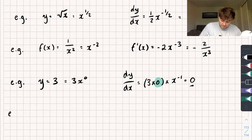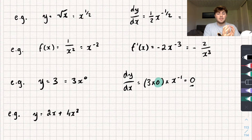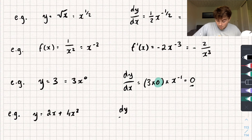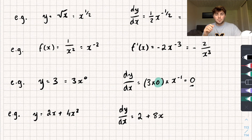Finally, the last example: say we had y equals two x plus four x squared. If we wanted to differentiate this, we have to differentiate each term one at a time. So dy by dx — differentiating two x gives us two, and differentiating four x squared gives us eight x. So we get two plus eight x as our answer. And I think that's pretty much it for this video, so hopefully it was useful.